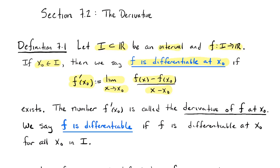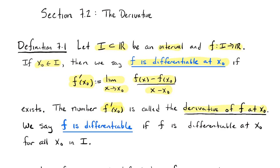What would this limit depend on? Well, it would depend on f and it would depend on x₀. But I can't call the limit f(x₀) because that notation is already taken. So we just decorate it a little bit: f prime of x₀ is just a way of saying this number depends on the function and x₀. We decorate it with this prime. So it's differentiable at a point if that limit exists, and f prime of x₀ is the notation for that number — we call it the derivative of f at x₀. It's a number.